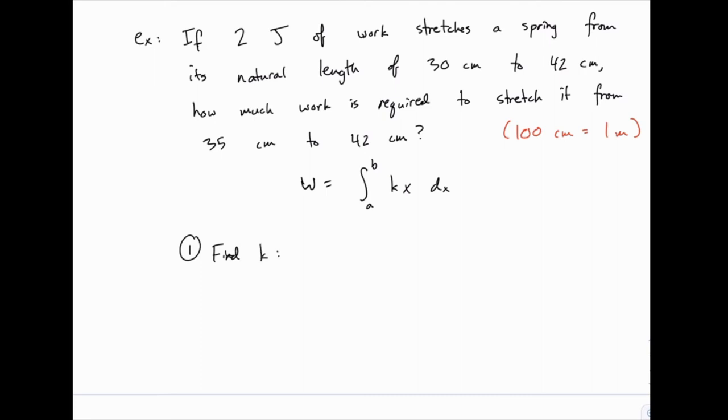The way this one's set up for us is different than the previous one. The previous one gave us the force required to hold the spring at a certain point, and from that we could work backwards to the stiffness of the spring. This one tells us how much work is required to stretch it a certain distance. So instead of giving us a force, it gives us a work, but we can still use that to calculate the stiffness of the spring.